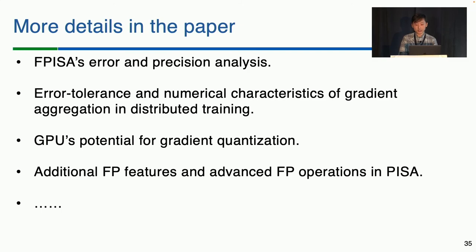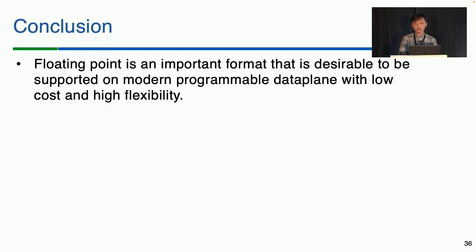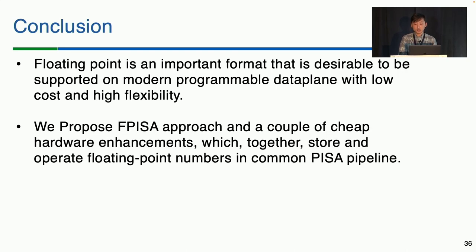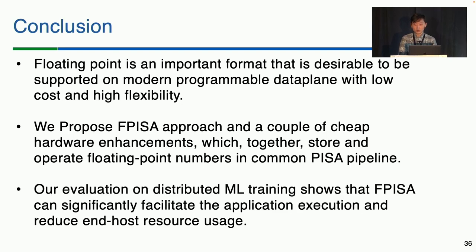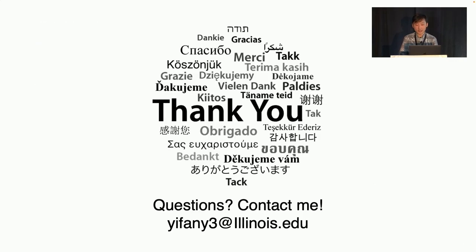Due to time limits, I'm not able to cover every aspect of our work — please refer to our paper for more details. To recap, due to design and implementation complexity, today's PISA-based programmable switches typically do not support floating-point operations, which are common and important in many distributed and networking applications. To address this, we propose FPISA along with a few hardware enhancements that enable the PISA pipeline to operate on floating-point data natively with acceptable approximation. Using distributed machine learning training as an example, we demonstrate that compared to state-of-the-art fixed-point-based solutions, FPISA-based in-network aggregation can significantly reduce both training time and end-host resource consumption. Thank you for your attention, and I'm happy to take questions.